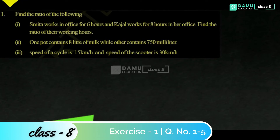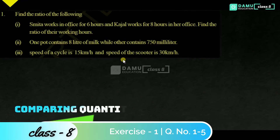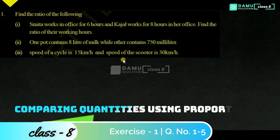Hello viewers. Our first question is: find the ratio of the following. Smither works in office for 6 hours and Cajal works for 8 hours in her office. Find the ratio of their working hours.